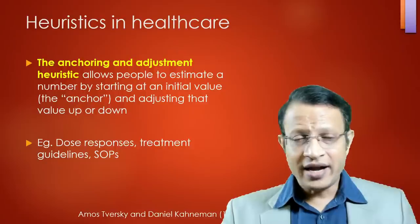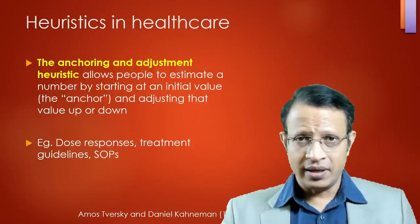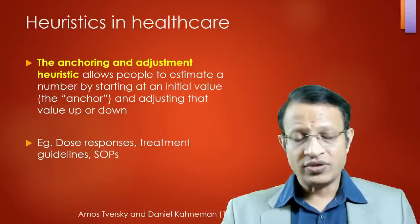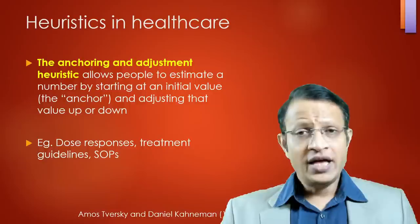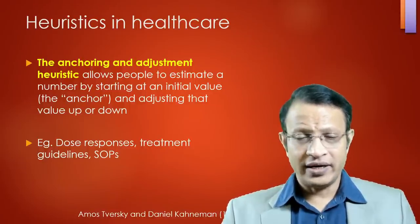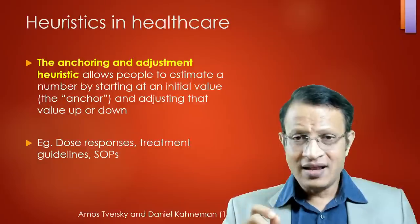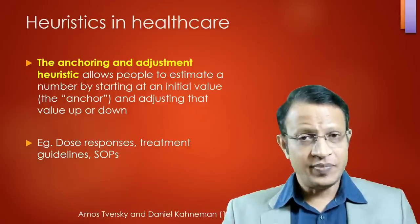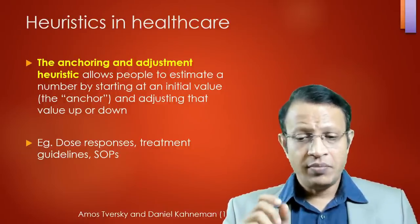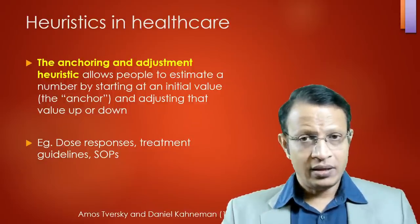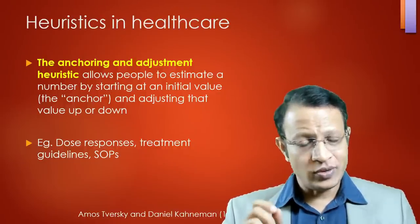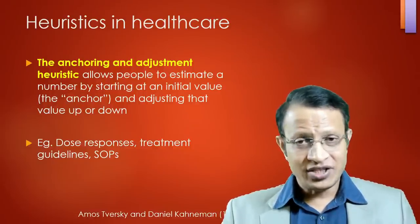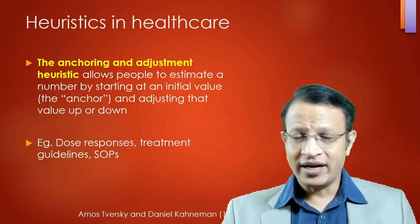The second is anchoring and adjustment heuristics, which allows people to estimate by starting at an initial value and adjusting up or down. For example, when determining a medication dose, initial experimental models establish a range — doses are increased or decreased depending on blood levels and therapeutic levels. This becomes the standard operating procedure; a medicine dose may be fixed at, say, 4 to 8 mg. The doctor uses the treatment guidelines — that is anchoring and adjustment heuristics.